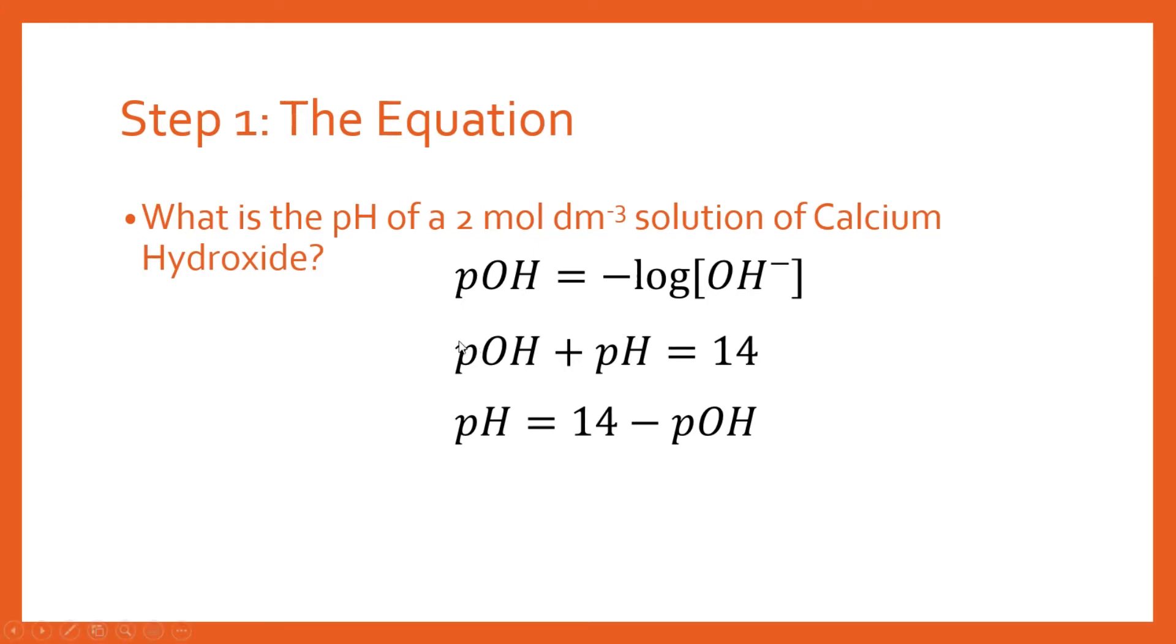We've already got an expression for pOH, which is here, so we can substitute. And so I've just replaced the pOH with our expression from the very top here. We can notice that this is a minus minus, so we change that to a plus. And we've now got a really nice and simple expression for pH that only requires us to substitute the hydroxide ion concentration.